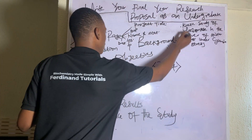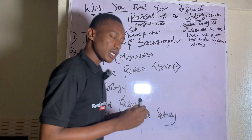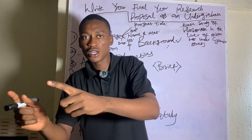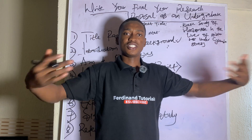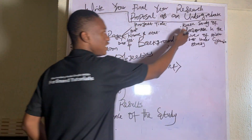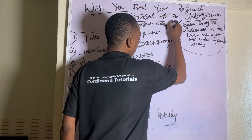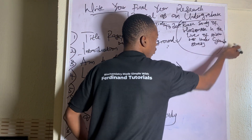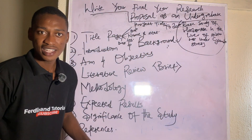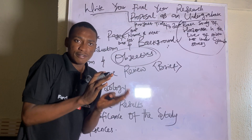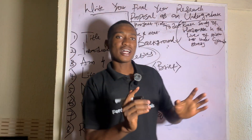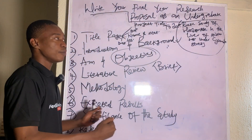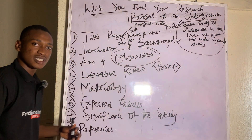The next section is Aim and Objective. Your aim is a one-line sentence of what you want to achieve. To find your aim, all you need to add is 'to determine.' For example: 'To determine the kinetic study of rhodanese in the liver of Wistar rats under cyanide stress.' Objectives are different — they are the steps you follow through to achieve that aim. Aim and objective are not the same thing.